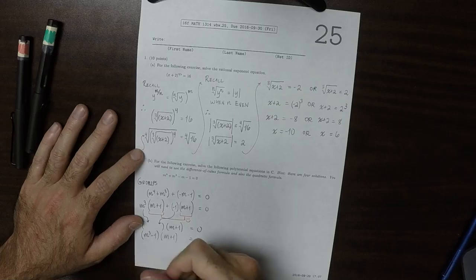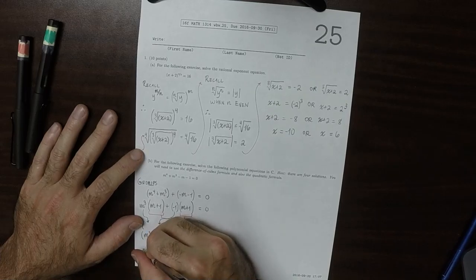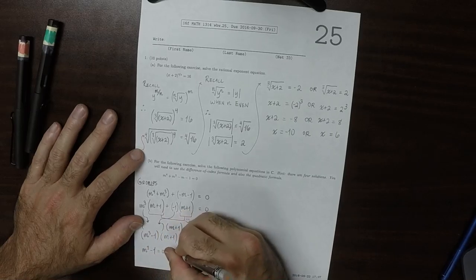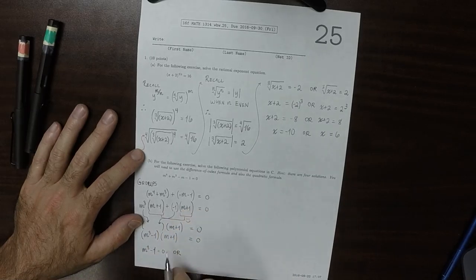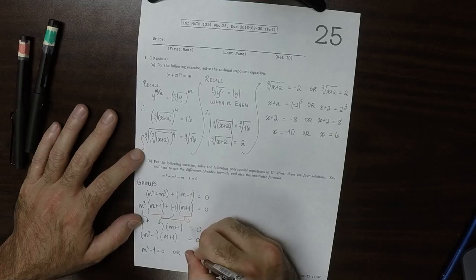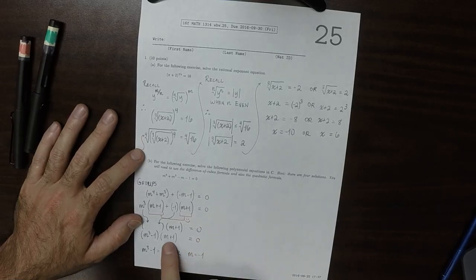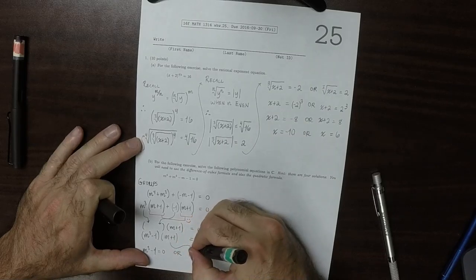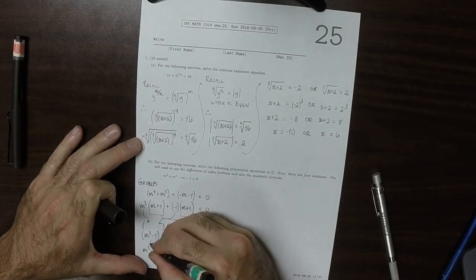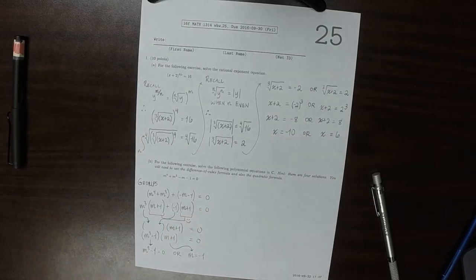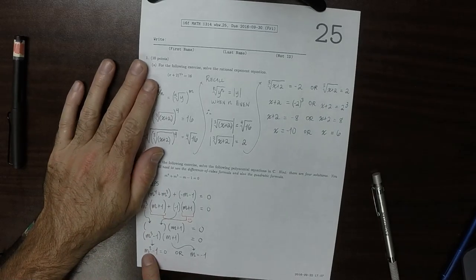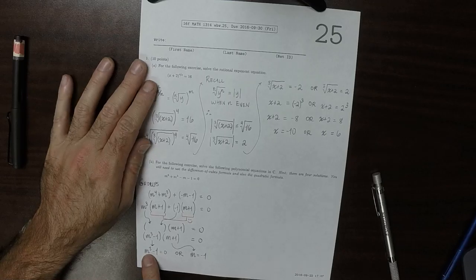And so now, the equation splits into pieces because we have a product equal to 0. So it must be the case that m cubed minus 1 is 0, or the other possibility is that m is negative 1 from that one.